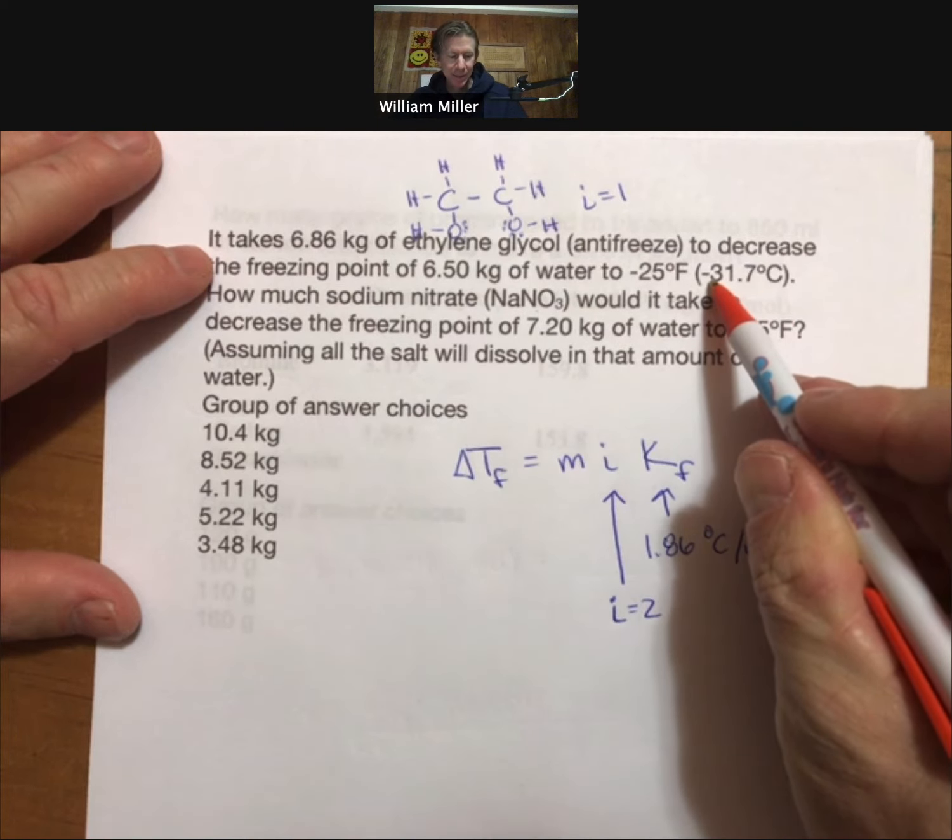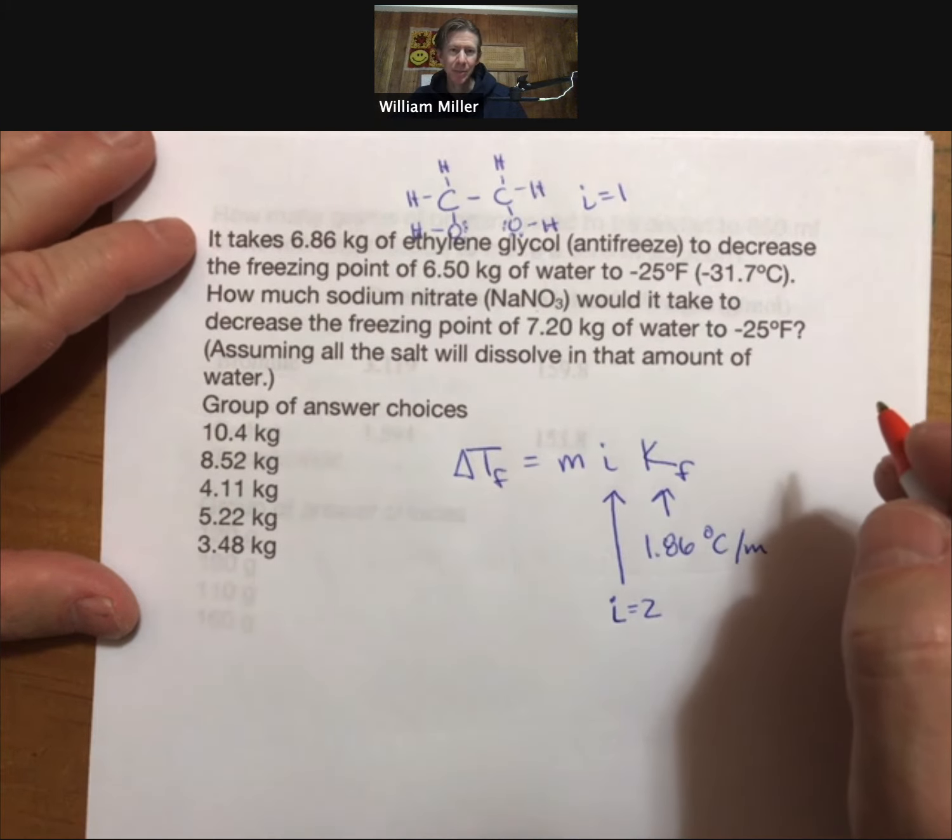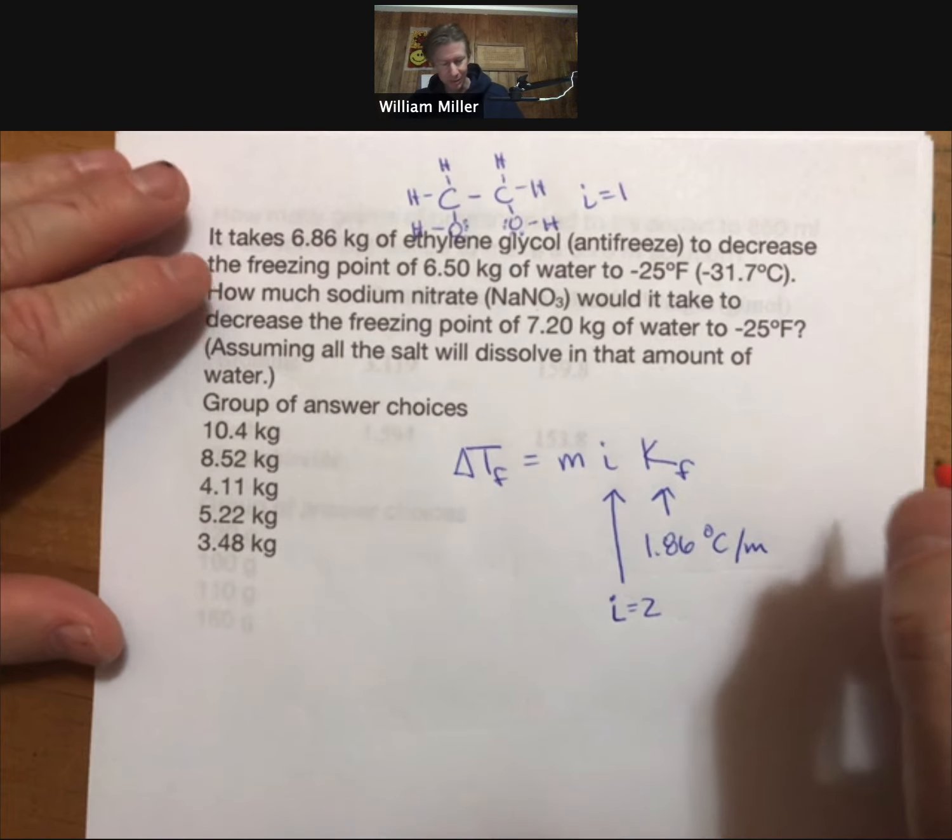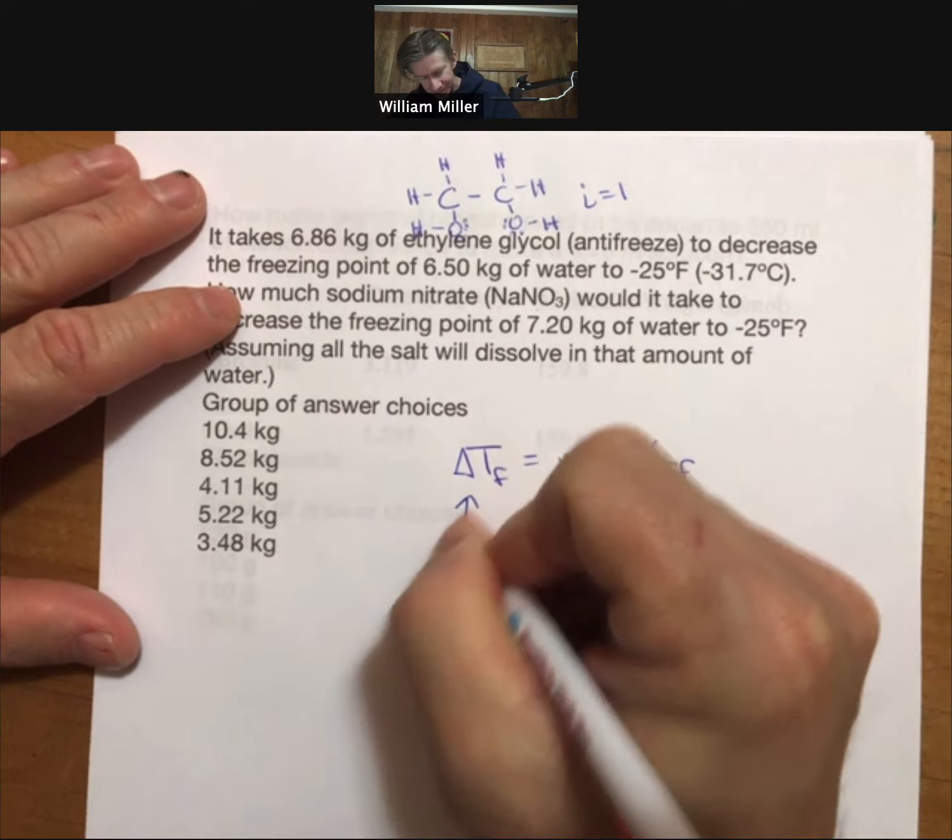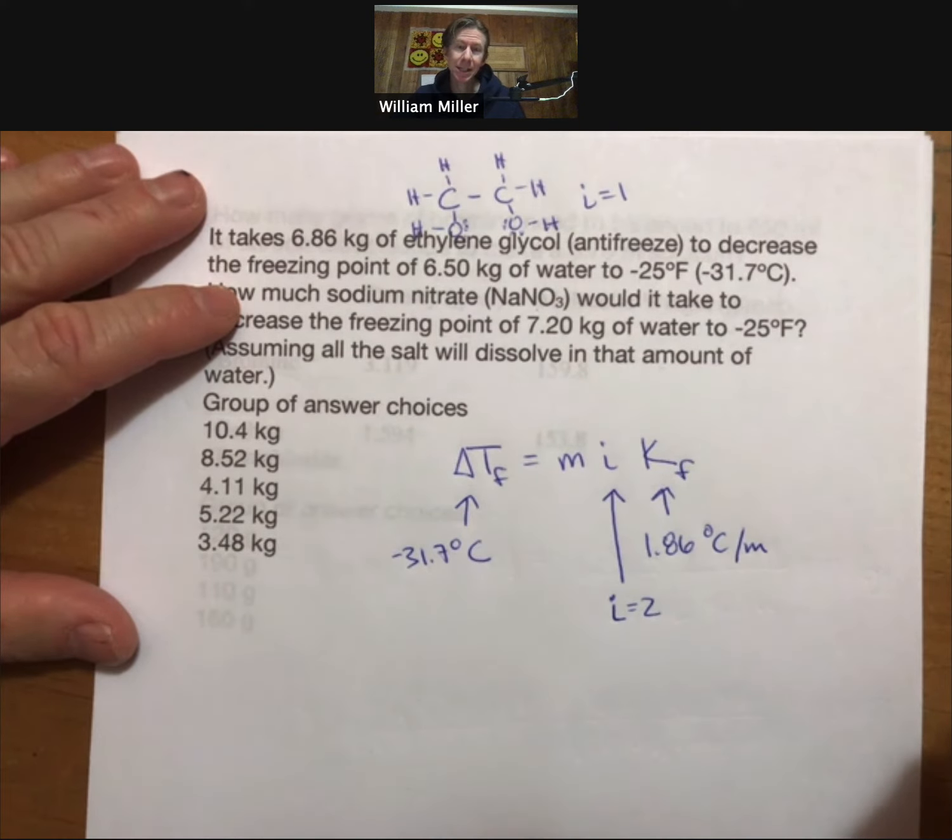Since zero is the regular freezing point, we're actually changing the freezing point by negative 31.7 degrees Celsius, so that's going to be our delta T as well.